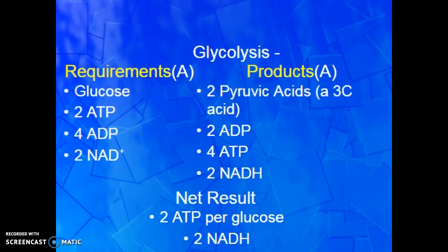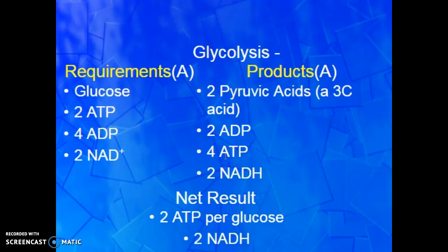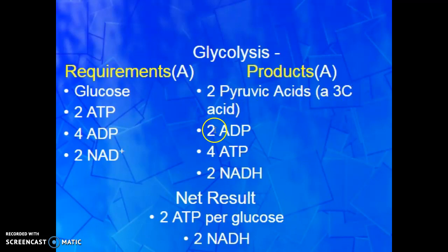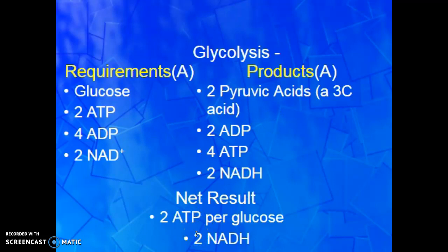In glycolysis, glucose goes in, ATP goes in, ADP goes in, and NAD+ goes in. You've got to spend money to make money — you spend 2 ATP to get 4 ATP. Our results are 3-carbon acids, 4 ATP, and 2 NADH. So our net result, once we cancel out, is 2 ATP per glucose and 2 NADHs that we're going to use later. That's the real summary of glycolysis.